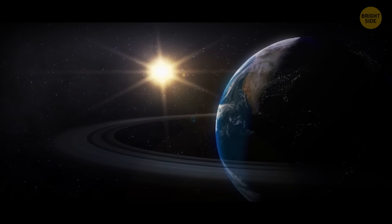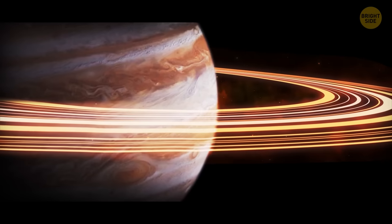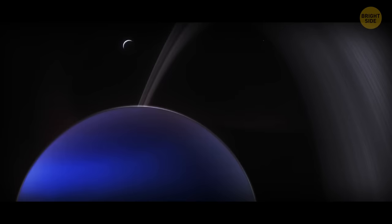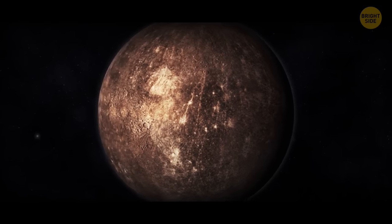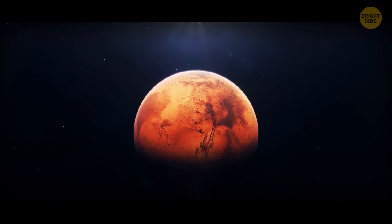Have you ever wondered why Earth doesn't have rings? Gas giants - Jupiter, Saturn, Uranus, and Neptune have them. But the rocky planets, Mercury, Venus, Earth, and Mars, don't.